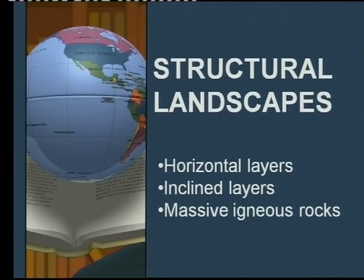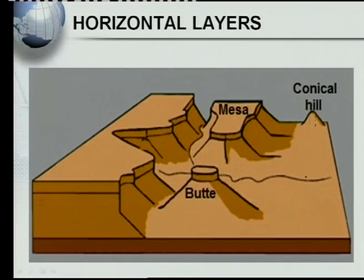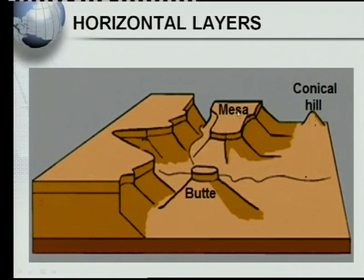We've covered fluvial processes and now move on to structural landscapes. Very important here is that we look at horizontal layers, inclined layers, and massive igneous rocks — each one very important. The horizontal layers and inclined layers are made up of sedimentary rock and are found in layers. For horizontal layers, you must look at the conical hill, the mesa, and the butte.